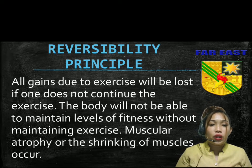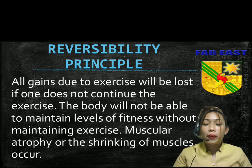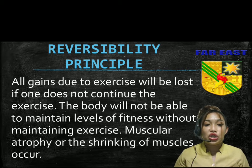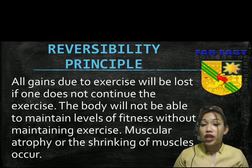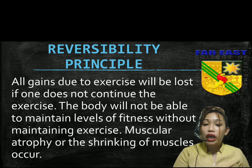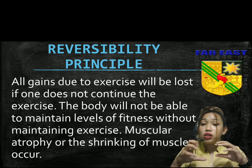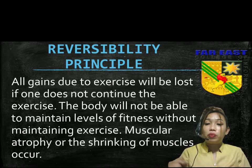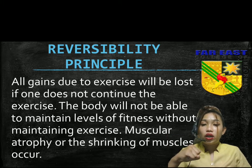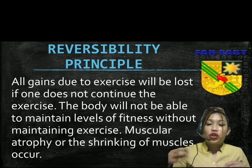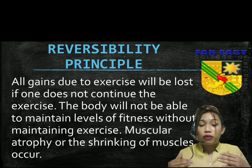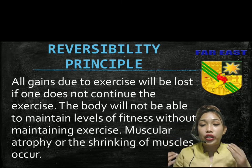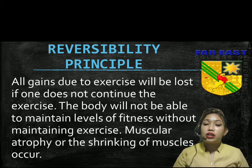So you need to keep maintaining your exercise. The shrinking of muscles is called muscular atrophy — this is the shrinking of muscles, from bigger they suddenly shrink. Your muscles will shrink again and you need to start over from the beginning, from the overload principle, because you were not doing your maintenance exercise.